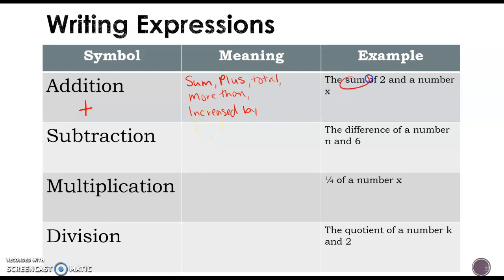When we look at our example here, we have the sum, and I'm going to circle my keywords, of two and a number X. So this number X is just saying it's a variable. Sum means addition, so 2 plus X, and that's the sum of 2 and a number X.